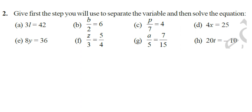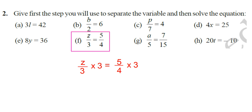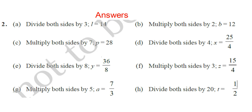Here is a question for you. Give the first step you will use to separate the variable and solve the equation. Do it yourself. Look at question number f: z by 3 is equal to 5 by 4. You want to separate z, so multiply 3 on both sides. You can write: z by 3 into 3 is equal to 5 by 4 into 3. You will get z is equal to 15 by 4. Here are your answers — do verify yourself.